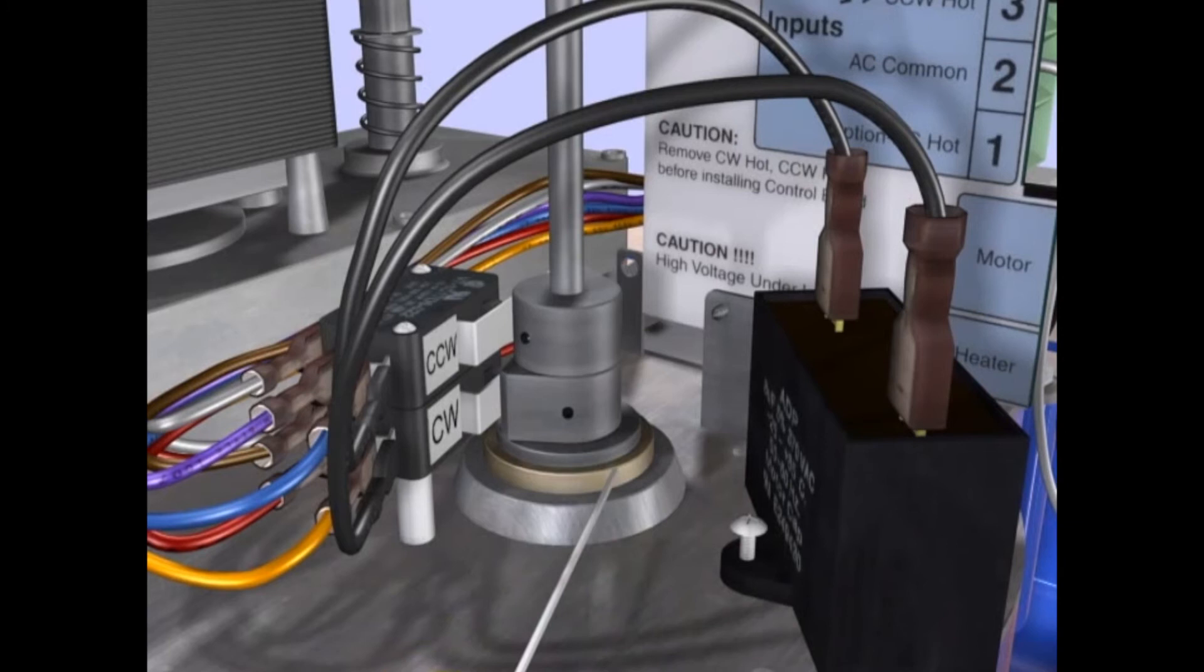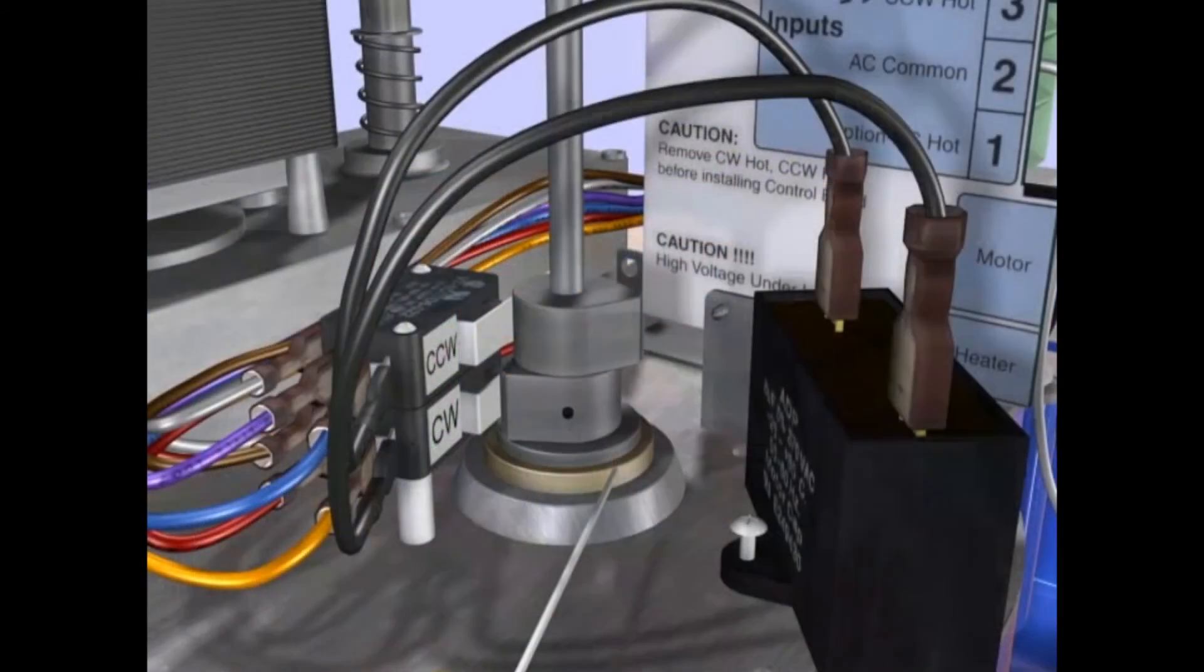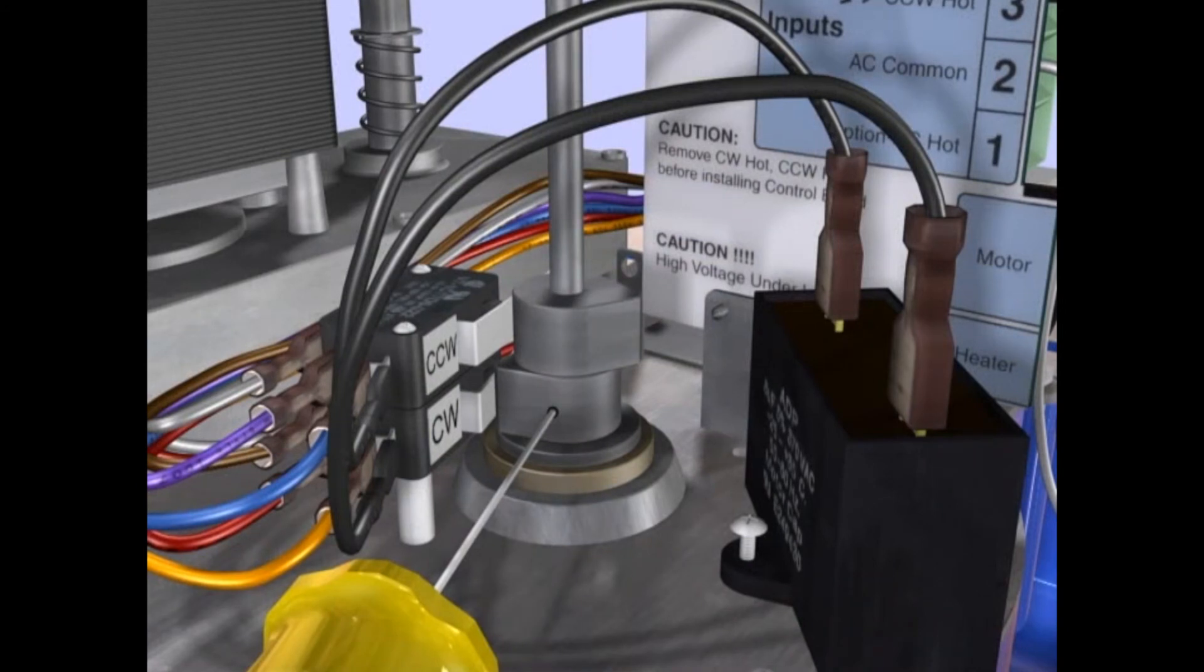To set the clockwise stop, first apply a hot signal to Terminal 4 or use the manual override to drive the actuator to the desired clockwise end of travel position. At this position, rotate the cam in the direction of travel to the exact point where the switch trips and tighten the set screw.